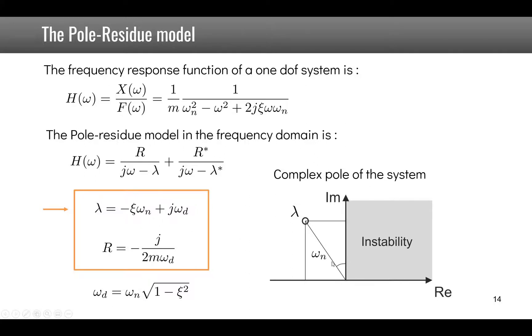Omega d as we see here is the imaginary part. The real part is minus psi omega n so that the angle here is given by psi.